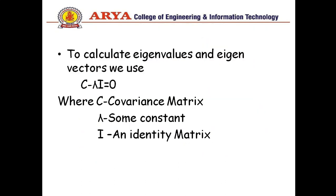Now to calculate eigenvalues and eigenvectors, we use the formula c minus lambda I equals 0, where c is your covariance matrix, lambda is some constant we have to calculate, and I is an identity matrix. The identity matrix will be the same dimension as your data set. If you have two data sets, the identity matrix will be 2 by 2.